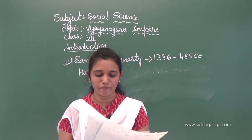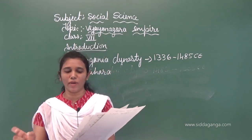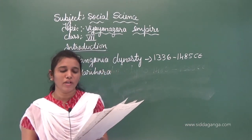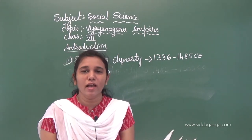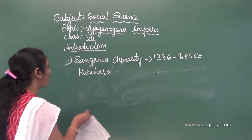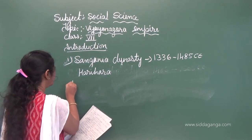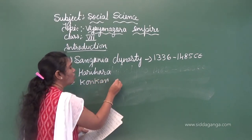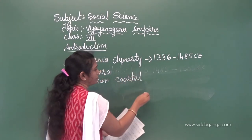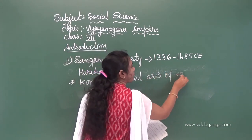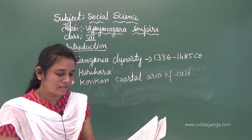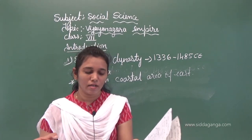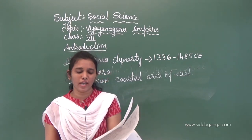Harihara was the first king of this dynasty. When Harihara took power, he extended his empire to the Konkan coastal area of the west.